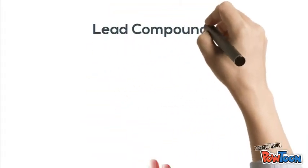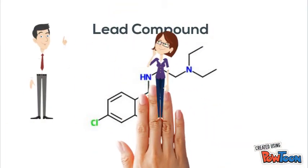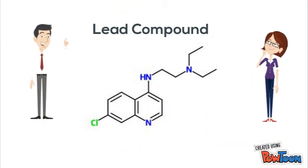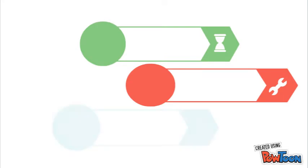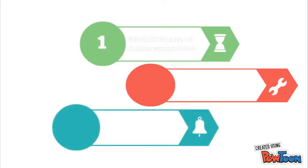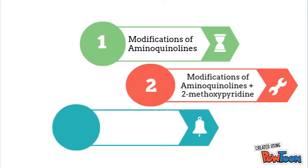Based on the lead compound, we decided to modify the molecule structure to increase its activity. There are three main groups of changes that we've done. The first one is the modification of the aminoquinolins. The second one is the modification of aminoquinolins plus 2-methoxypiridine.